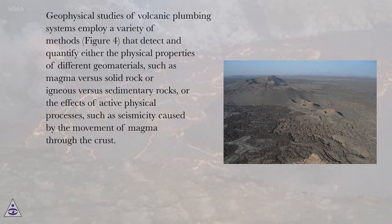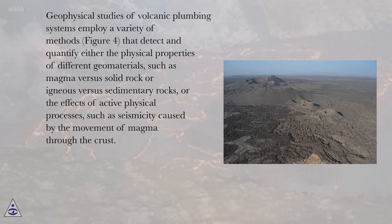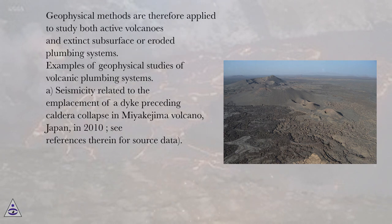Geophysical studies of volcanic plumbing systems employ a variety of methods that detect and quantify either the physical properties of different geomaterials, such as magma versus solid rock or igneous versus sedimentary rocks, or the effects of active physical processes, such as seismicity caused by the movement of magma through the crust. Geophysical methods are therefore applied to study both active volcanoes and extinct, subsurface, or eroded plumbing systems.